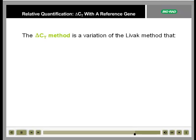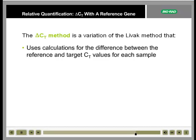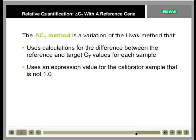The delta-CT method is a variation of Livak method that is simpler to perform, but that generates essentially the same results. This method uses calculations for the difference between the reference and target CT values for each sample. It also uses an expression value for the calibrator sample that is not 1.0, which is the main difference between this method and the Livak method.